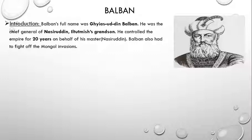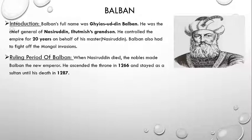When Nasiruddin died, overall control of the empire came into the hands of Balban. During the time of Balban, the Mongols kept on trying to invade India, so Balban had to fight off the Mongol invasion. When Nasiruddin died, the Nobles made Balban the new emperor. He ascended the throne in 1266 and stayed as Sultan until his death in 1287. An interesting fact about Balban: he was also a slave and one of the 40 Turkic slaves of Il Thutmish's group. So with the time period of Balban, the Mamluk dynasty also came to an end.